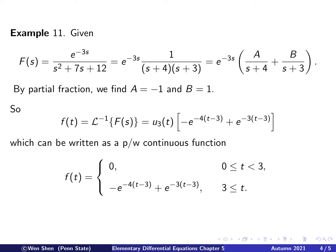We can also write this as a piecewise continuous function using the fact that u₃(t) is 0 for t less than 3. So for t less than 3, we just have 0. For t greater than 3, u₃(t) is 1, so we get negative e to the negative 4(t minus 3) plus e to the negative 3(t minus 3). So we clearly see a discontinuous function here.